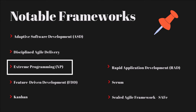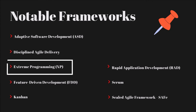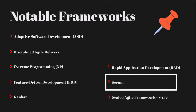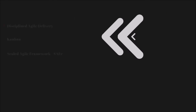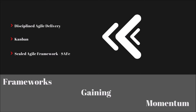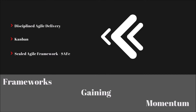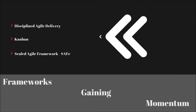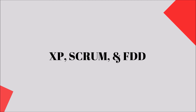A few notable frameworks would be Extreme Programming (XP), Feature Driven Development (FDD), and Scrum. Disciplined Agile Delivery, Kanban, and Scaled Agile Framework are all Agile frameworks that are quickly gaining traction. Let's go over XP, Scrum, and FDD — a brief overview will be given for each framework.